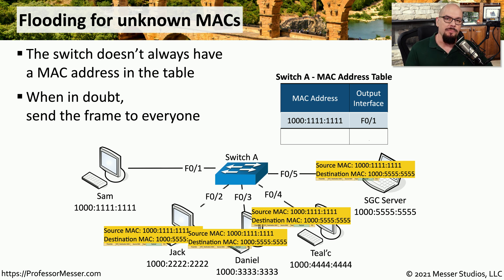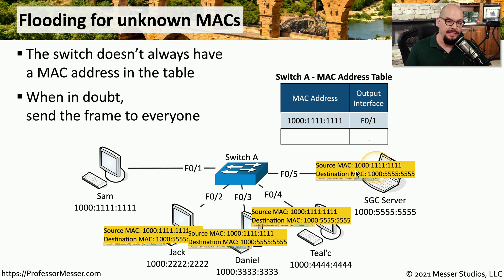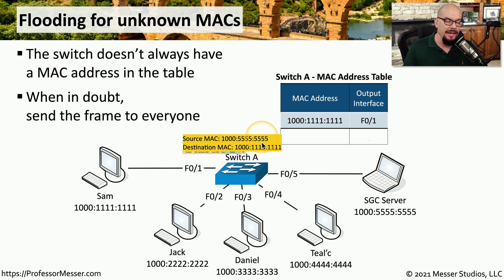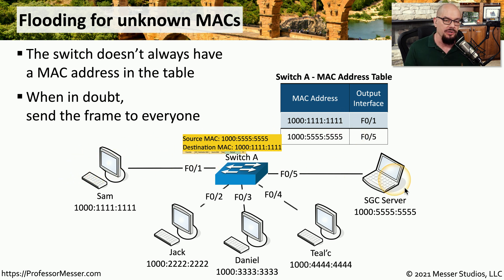If you're familiar with the operation of a hub, you'll notice this is very similar to how a hub works normally. But sending traffic to every device ensures that at least the destination will receive that particular frame. In this example, the SGC server did receive that frame. When the SGC server responds back to Sam, the switch identifies the source MAC address, adds it to the MAC address table, and will no longer need to flood traffic across all interfaces for communication between Sam and the SGC server.